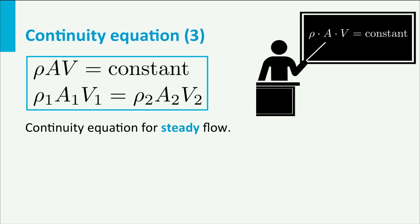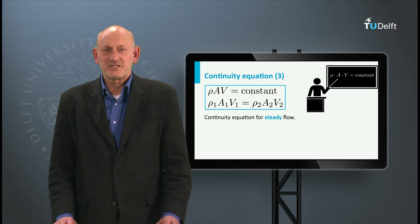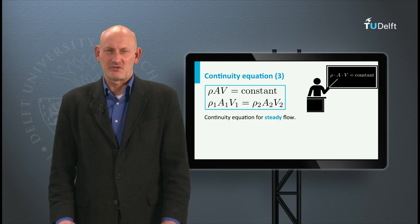The first fundamental equation for steady flow we have is rho A V is constant, or if you like, rho 1 A1 V1 equals rho 2 A2 V2. This is known as the continuity equation.